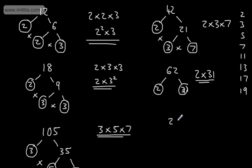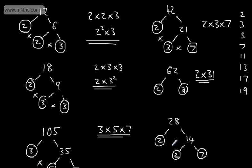Let's do 28. I can divide that by 2, which leaves me 14. I can still divide this by 2, which leaves me 7. All of these are prime numbers, so we have 2 × 2 × 7, or 2² × 7.